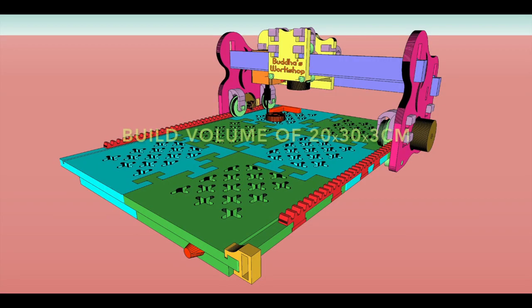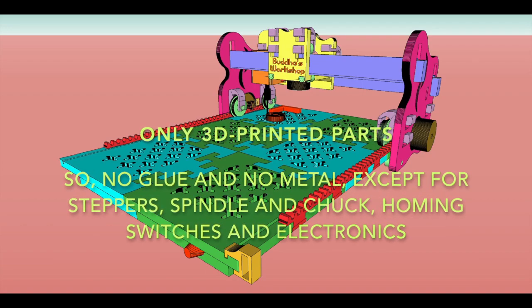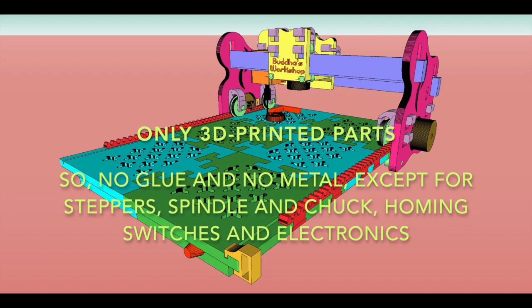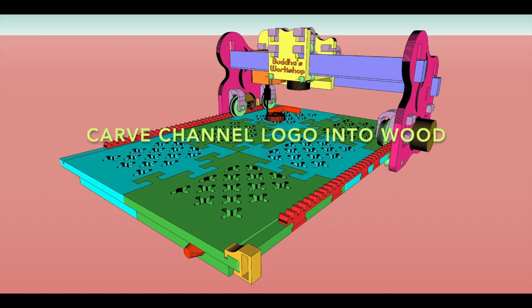And what are the challenges I impose on myself in this project? I would like to have a build volume of around an A4 page, roughly 20 by 30 centimeters and 3 centimeters in height on the z-axis. I want to use only 3D printed parts, which means no glue and no metal apart from the stepper motors, spindle motor and chuck, homing switches and electronics. At the end, I would like to have a precision of 1 millimeter per axis if possible. I would like to carve my logo into wood. And honestly, it also would be nice if I didn't burn down my workshop.